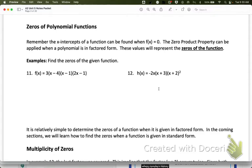So remember from our work with quadratics that the x-intercepts of any function can be found wherever f(x) is equal to 0. And we will use the zero product property once the polynomial is in factored form to help us find that. These are the zeros of the function, they're also the x-intercepts, and sometimes they're also referred to as the roots. So example 11 says find the zeros of the given function. Well, the first thing I need to do if I want to find the zeros is set my equation equal to 0 instead of f(x).